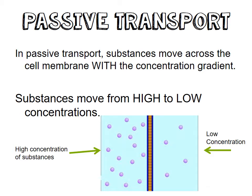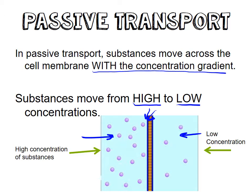In passive transport, substances move across the cell membrane with the concentration gradient. Substances move from an area of high concentration to an area of low concentration. Looking at this diagram, we have lots of a particular substance on one side and very few on the other side. This is our high concentration side, and this right here is the cell membrane. We want to move from high concentration to low concentration, so these molecules are going to move from this side to the other.